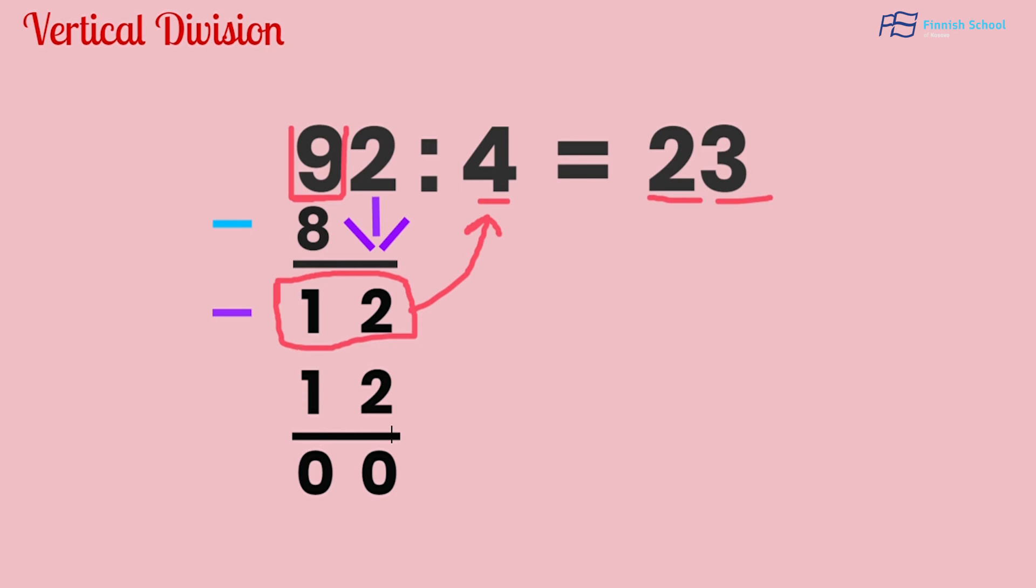And then we got 12 minus 12, which gives us 0, 0. When we don't have other numbers to put down and we get the result 0, 0, then we know that we have completely done the task.